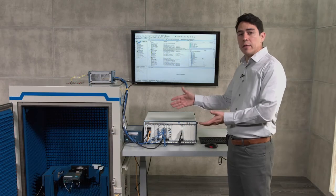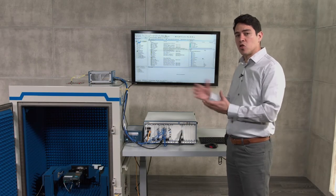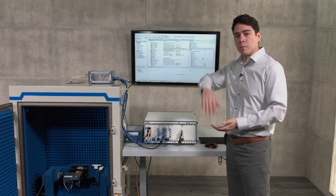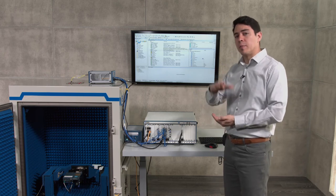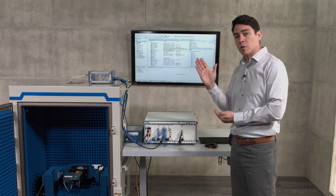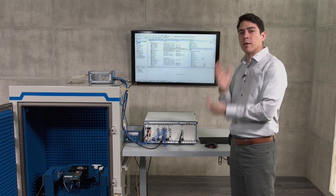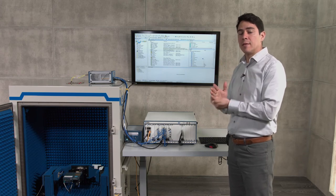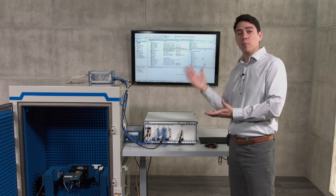So I'm going to execute now the autonomous sweep, in which we're going to tell in a single command to start sweeping. We're going to tell the positioner to start sweeping. And as it moves, we're going to be triggering RF measurements and getting that data completely synchronized with the movement.